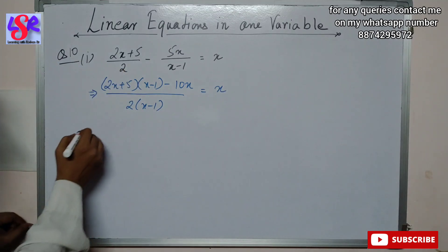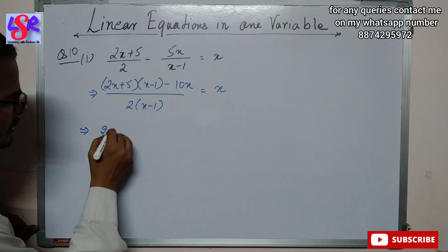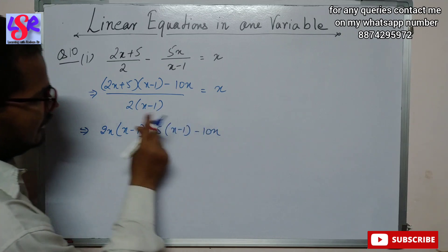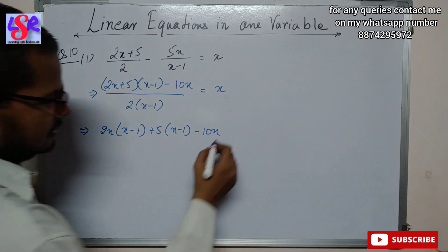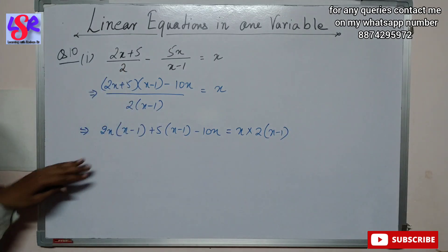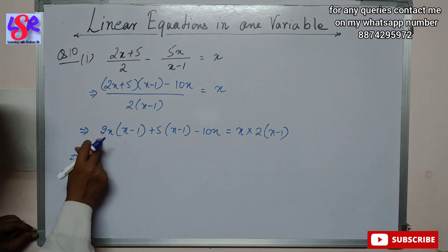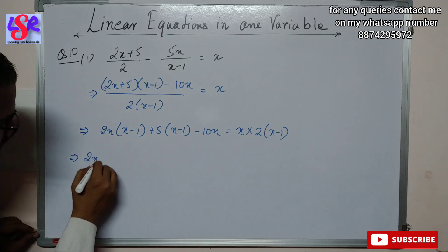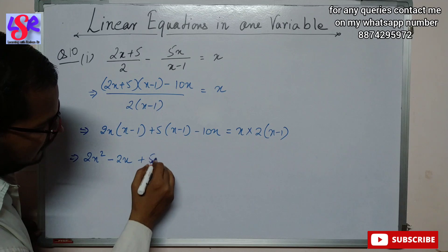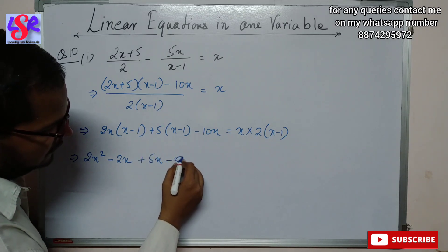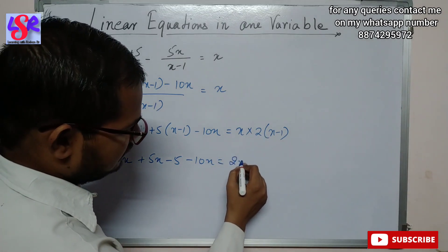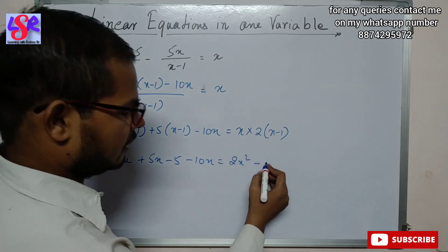Opening the bracket: 2x(x - 1) + 5(x - 1) - 10x on the LHS equals x(2x - 1) on the RHS. Expanding: 2x² - 2x + 5x - 5 - 10x equals 2x² - x.